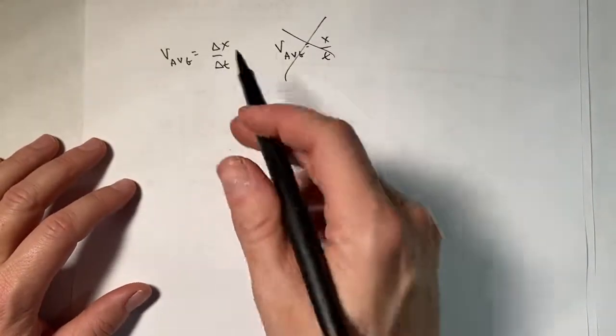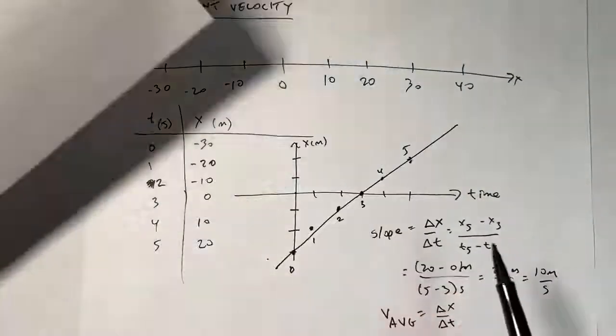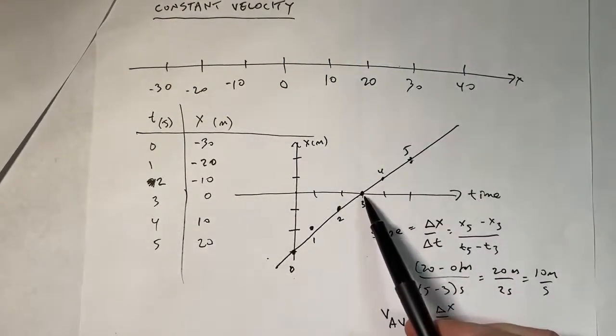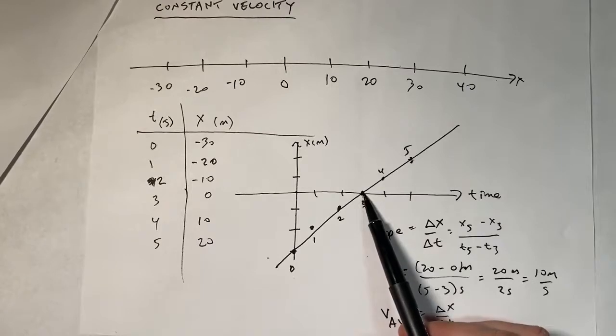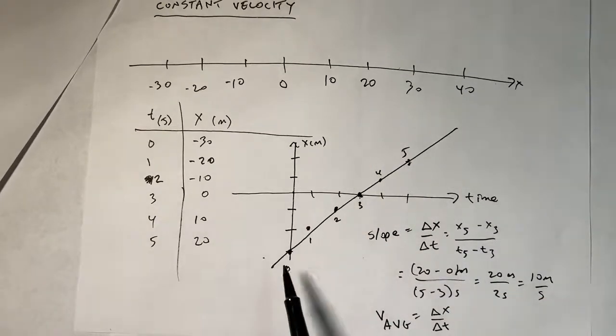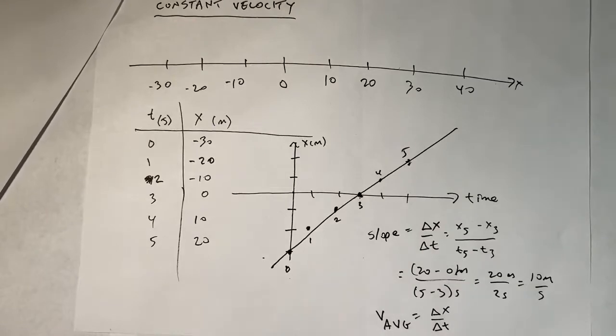It's the change in x over the change in time. And you can see here at x equals 0, if I go back to that graph, if I just do x over t, if I take x of 0, t of 3, I get 0 over 3 or 0 meters per second. That's not the velocity, okay?